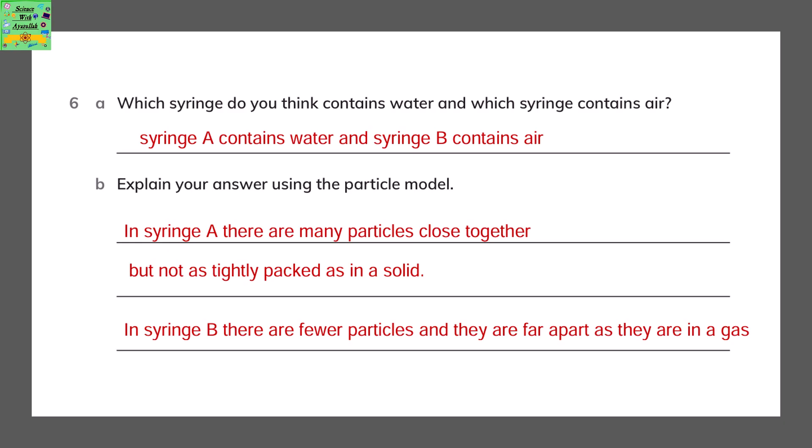Explain your answer using the particle model. In syringe A, there are many particles that are tied closely together but not as tightly packed as in a solid. In syringe B, there are very fewer particles and they are far apart so they are gas.